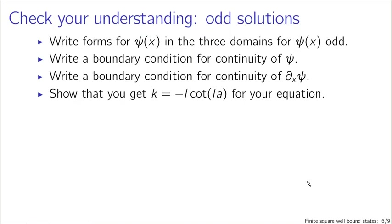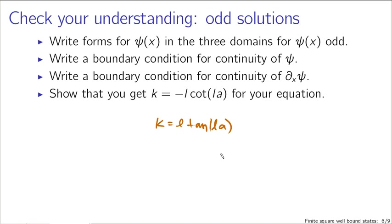To check understanding, you should work through the steps for odd psi(x). Going through exactly the same reasoning — enforcing that psi is odd, applying continuity of psi and its first derivative — you end up with the equation k = minus l cotangent(la). These are transcendental equations that don't have a particularly nice closed-form solution; we can only solve them numerically or graphically.